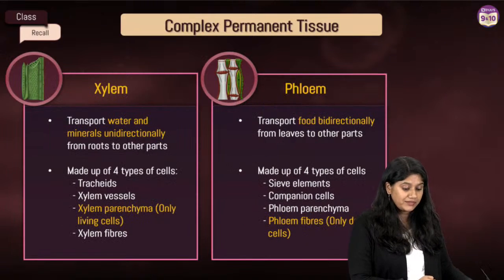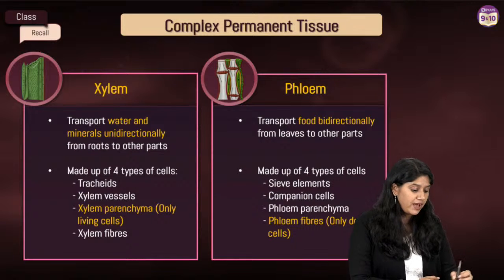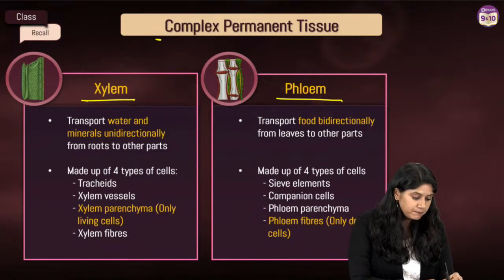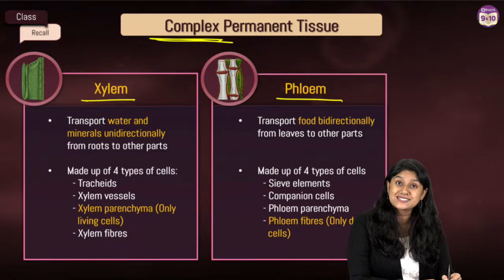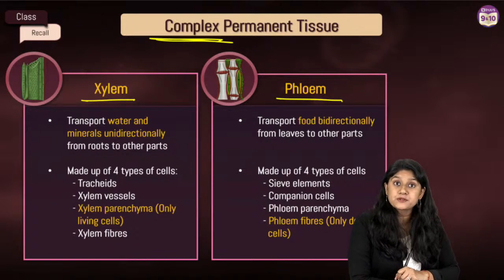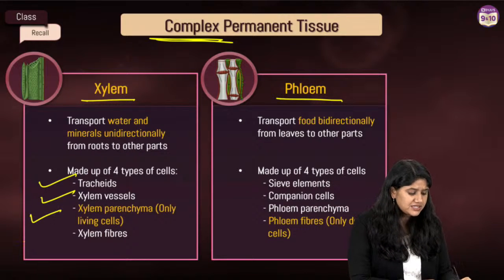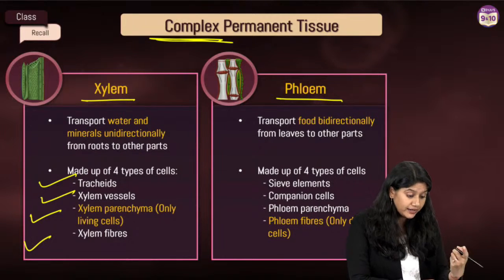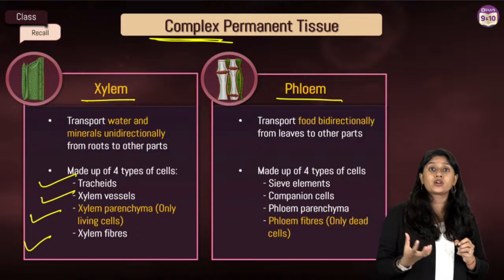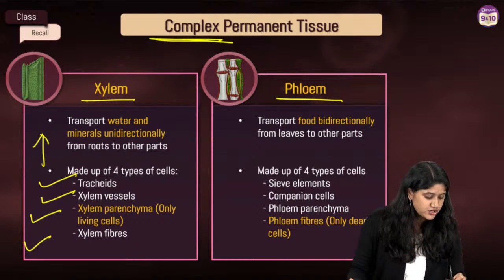The next tissue we are discussing is the complex permanent tissue. In complex permanent tissue we have xylem and phloem. We call them complex because different types of cells are present together. In xylem we have four different types: tracheids, xylem vessels, xylem parenchyma, and xylem fibre. Xylem helps in the conduction of water and minerals.